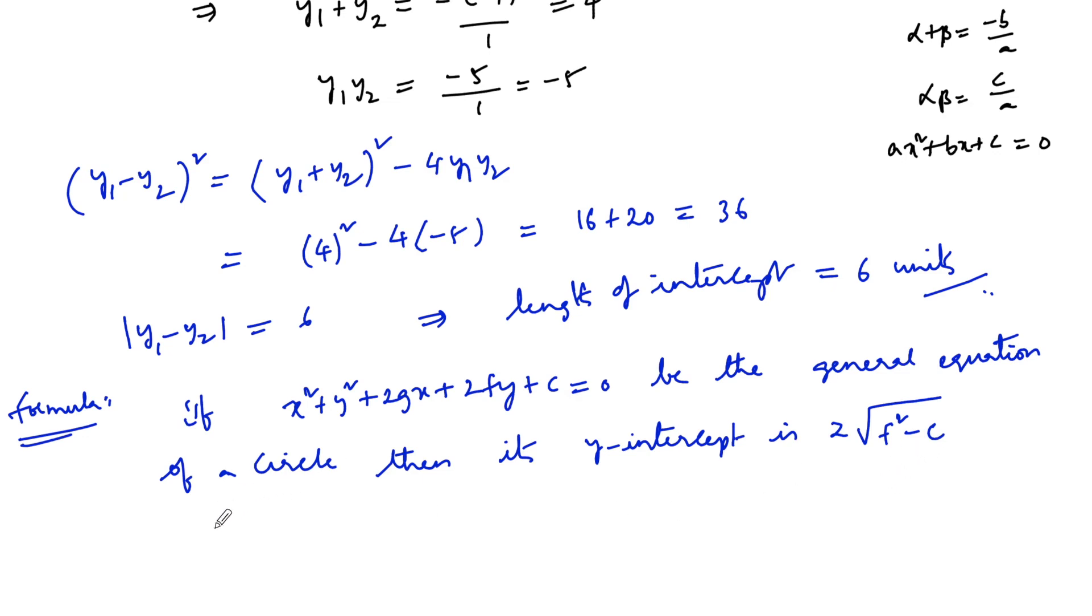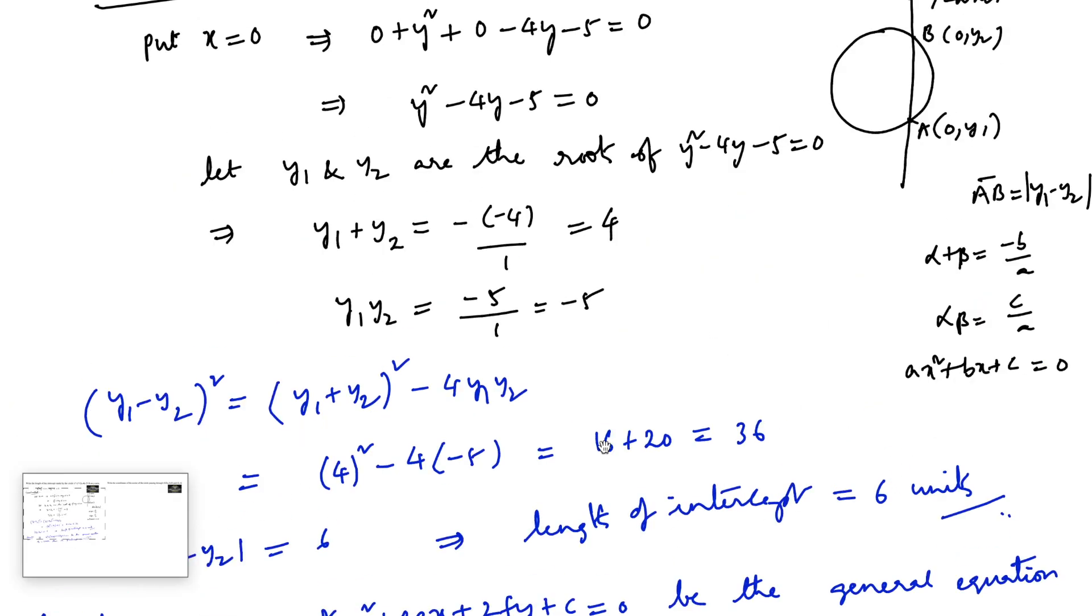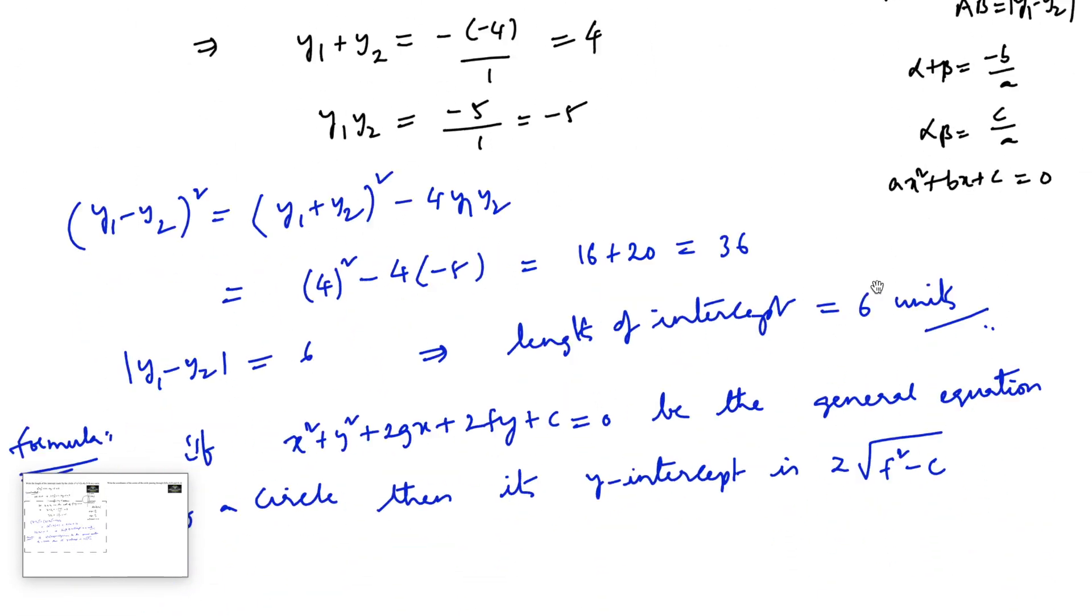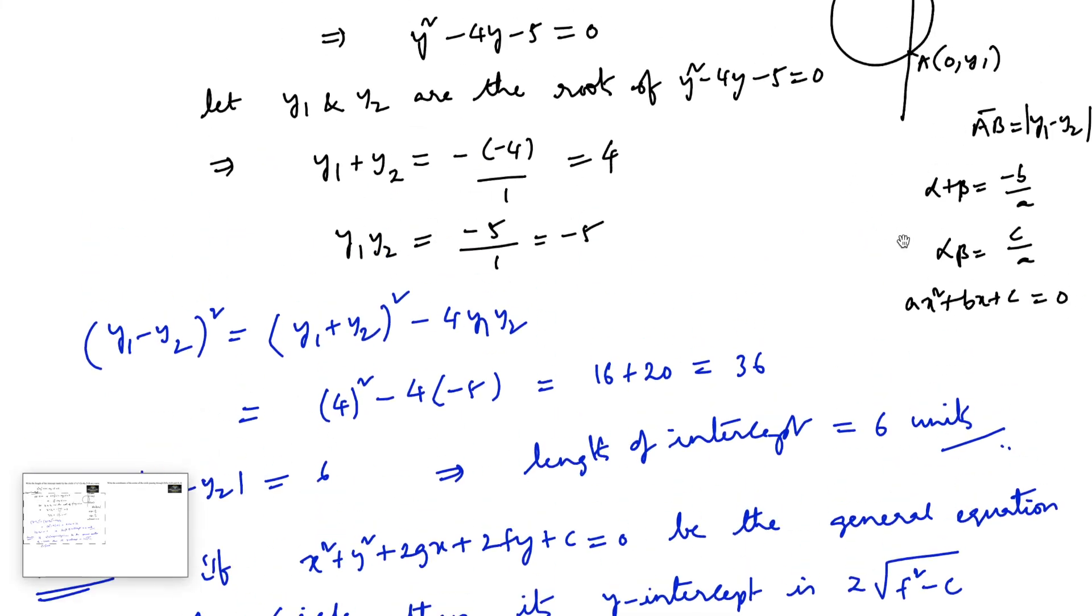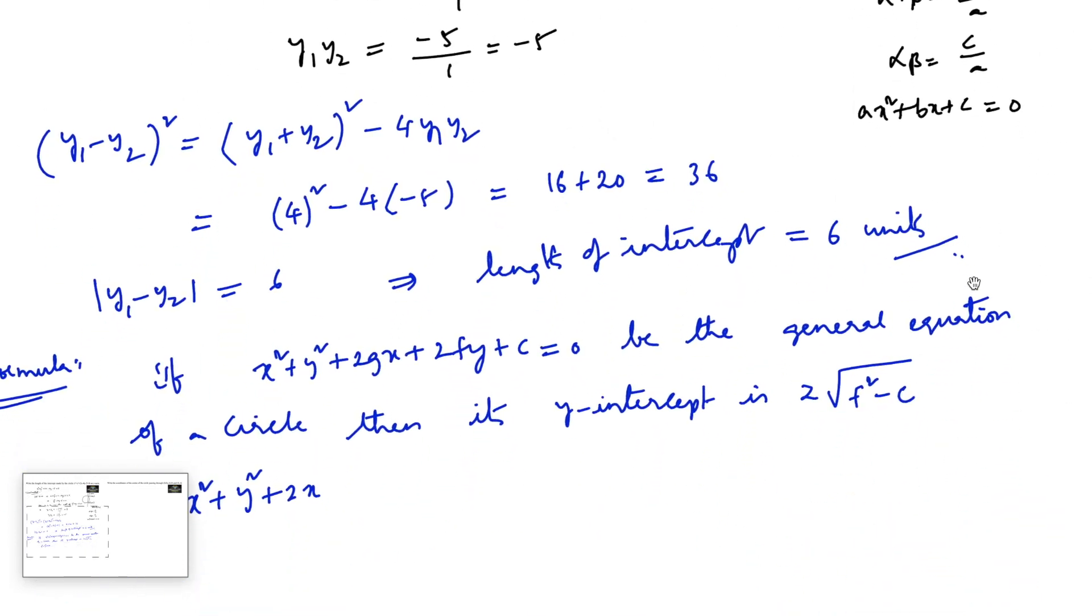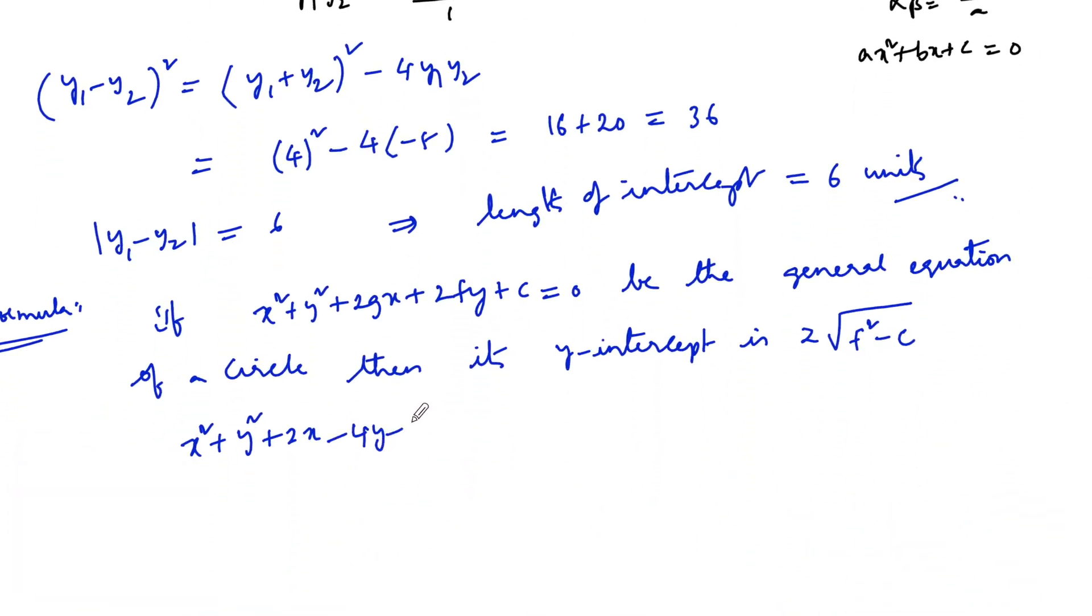When comparing the equation of the circle x² + y² + 2x - 4y - 5 = 0, so when comparing these two equations, we have f = -2 because 2f is -4, so f = -2, and c = -5.